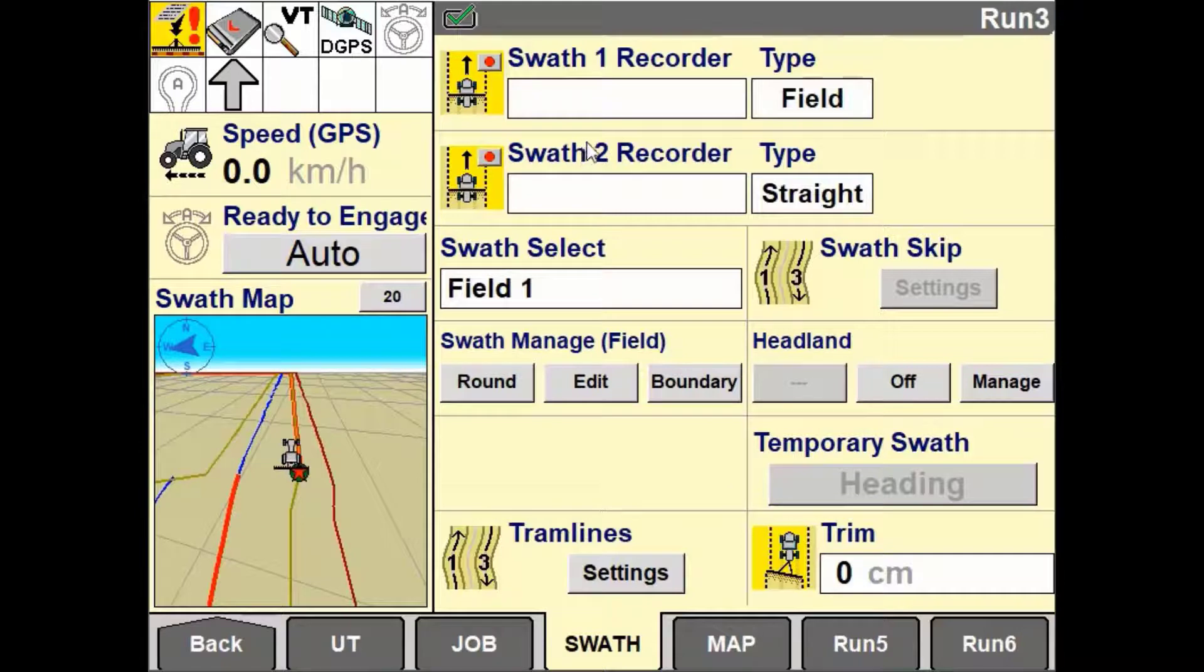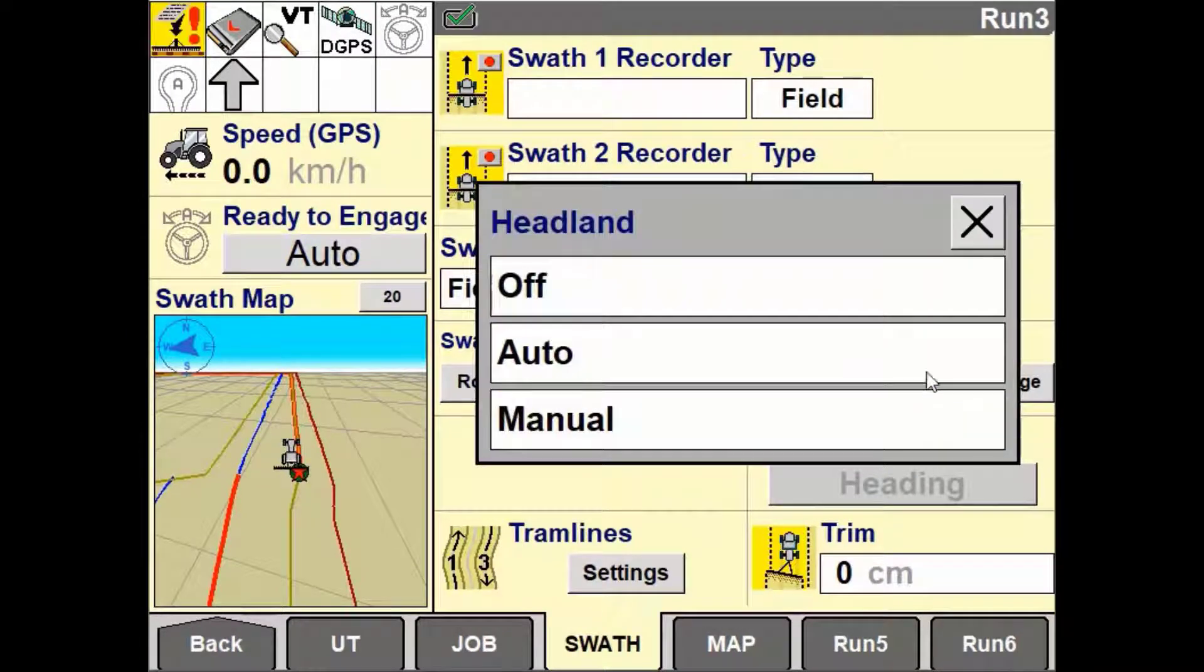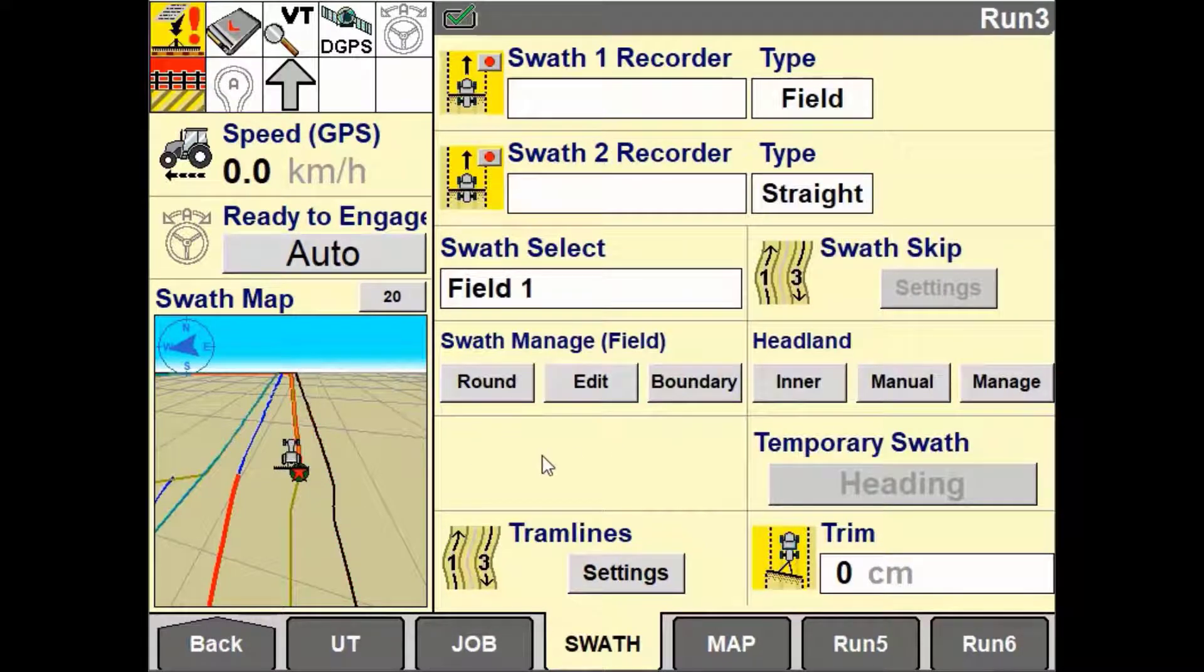The headland is typically where the vehicle turns and this defined point can be used to trigger actions such as end of row turns and automatic shut off of application control.